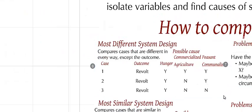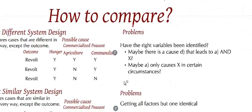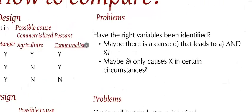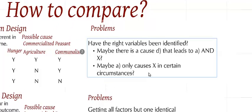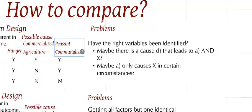Now, there are some problems with this. Here are a couple of good questions and concerns to think about when using this method. First of all, have the right variables been identified? I've looked at three different variables here, but maybe there are more. Maybe there are five variables that are relevant to this. Some variable that we didn't know that actually also is identical across the three cases. Maybe hunger leads to something else, which then leads to revolt.